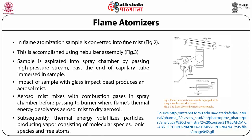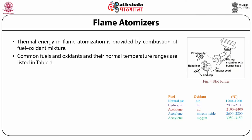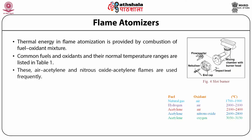Subsequently, thermal energy volatilizes the particles, producing a vapor consisting of molecular species, ionic species, and free atoms. Thermal energy in flame atomization is provided by the combustion of a fuel-oxidant mixture. Common fuels and oxidants and their normal temperature ranges are listed in table 1. Of these, the air-acetylene and nitrous oxide-acetylene flames are used most frequently.